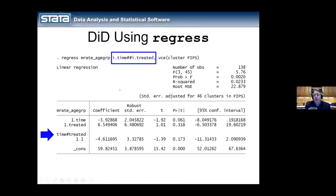You could also use factor variable notation: regress M_rate_age_group i.time##i.treated, vce(cluster fips). The double hashtag requests the main effects of time and treated as well as their interaction. That interaction term time × treated again estimates the ATET — the same number, minus 4.6. We're still using cluster robust standard errors to account for the clustering and repeated observations over time.